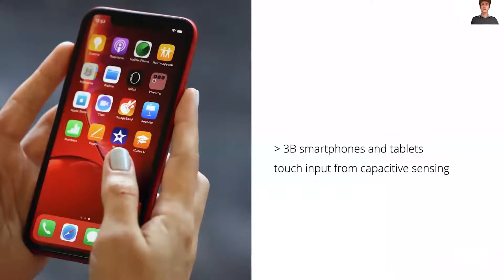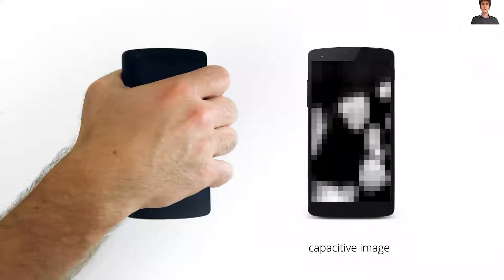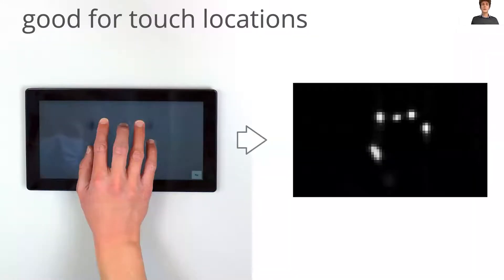There are more than 3 billion smartphones in the world that use capacitive sensing for touch input. Capacitive sensors measure the proximity of close-by objects that change the electric field between the sensor lines. The resolution of these sensors is determined by the primary purpose, which is to reliably detect touch events and to discriminate adjacent touches.